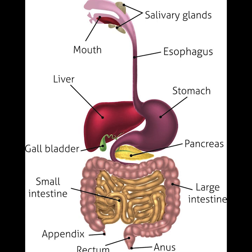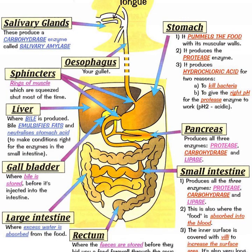Gastric acid and the production of mucus in the stomach are essential for the continuation of digestion. Peristalsis is the rhythmic contraction of muscles that begins in the esophagus and continues along the wall of the stomach and the rest of the gastrointestinal tract.